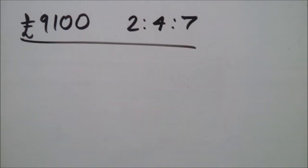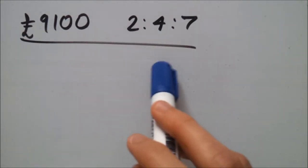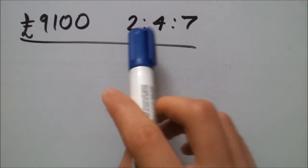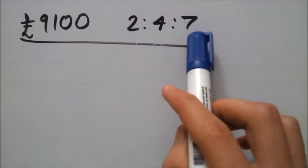Okay, well the first step would be, the easy step would be to add up the ratios to see how many parts there actually are. So firstly, 2 plus 4 is 6, plus 7 is 13.